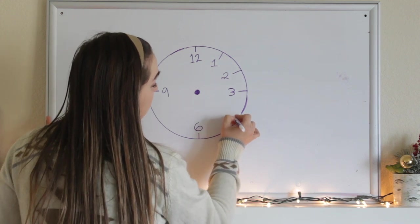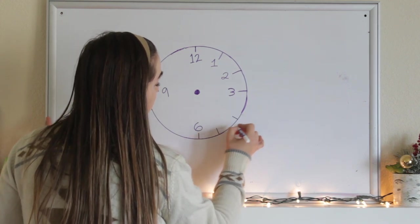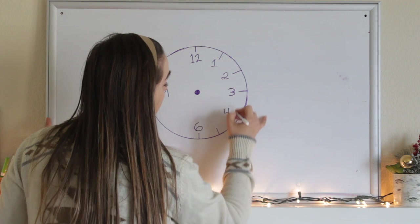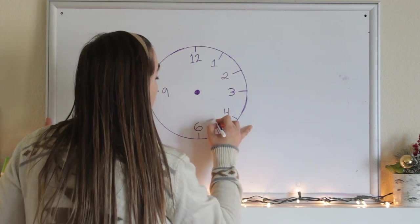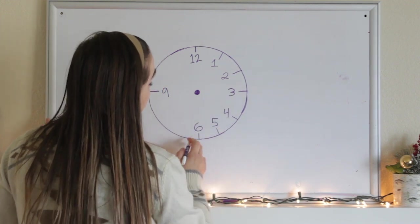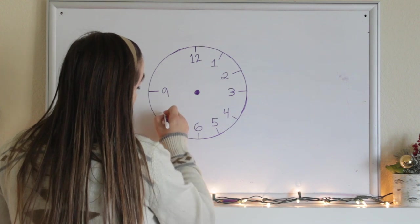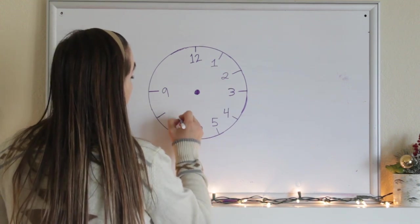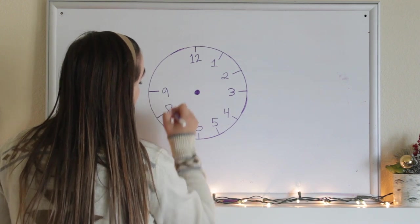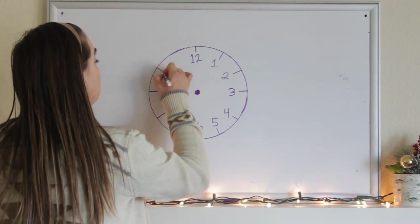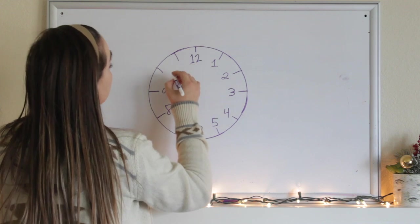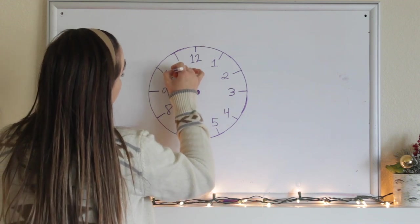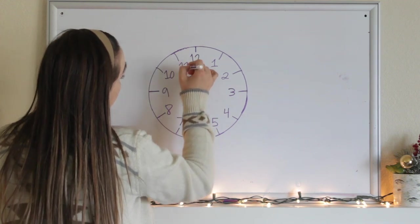And then I'm putting, after 3, I'm going to put 4. Then I'll put 5. And then we already have 6. And I'm going to make 2 more lines in between 6 and 9. And then I'll put 7 here. And then 8 right here. 2 more lines in between 9 and 12. And we have 10 and 11.